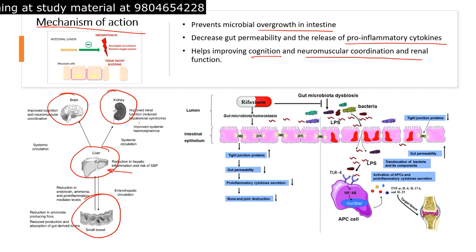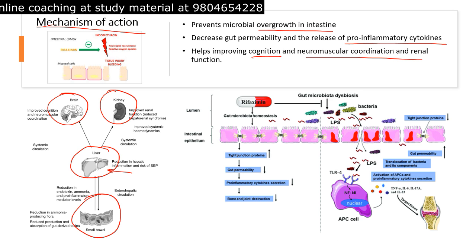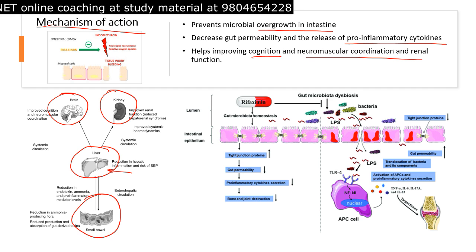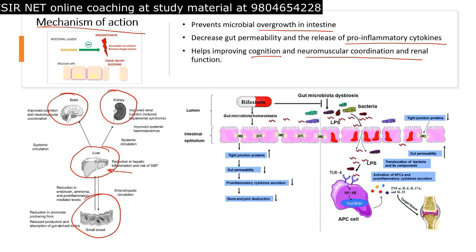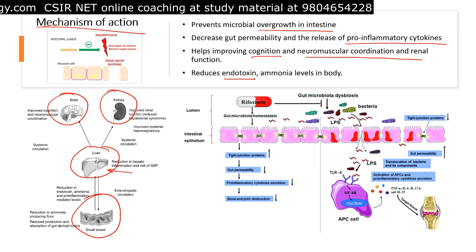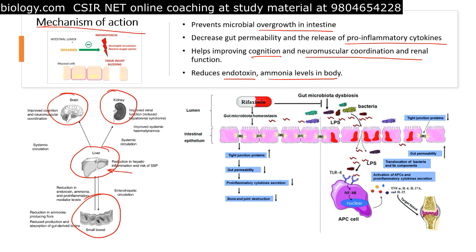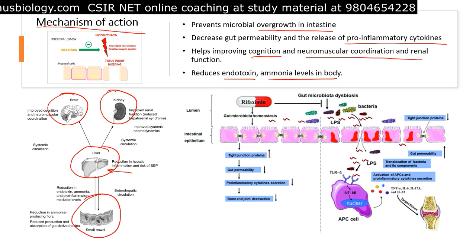Rifaximin is not only acting as an antibiotic but also as a chemical factor that allows different organs of the body to properly function. It has a multi-dimensional role and reduces endotoxin and ammonia levels in the body.